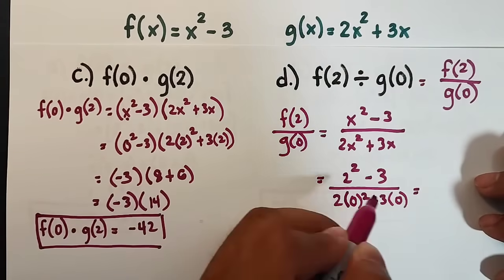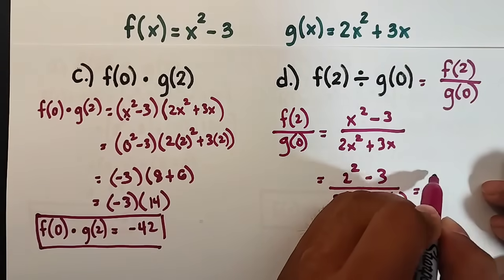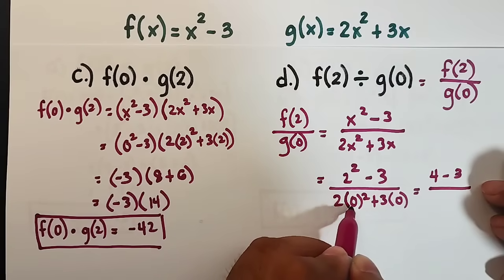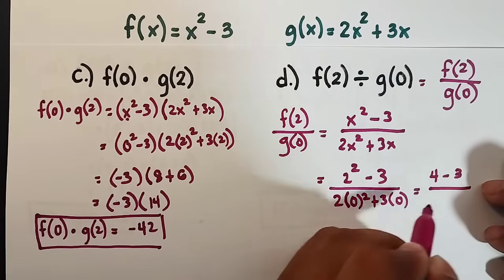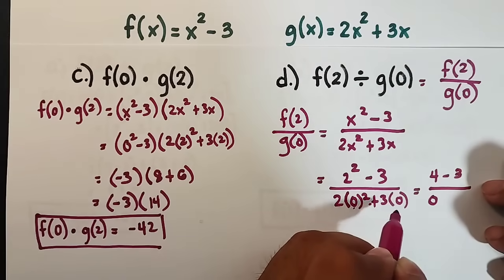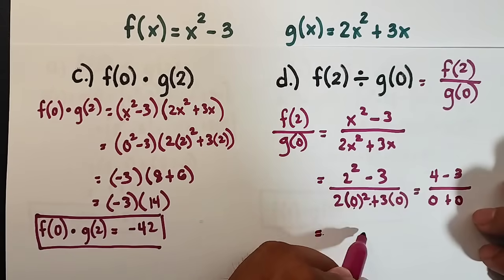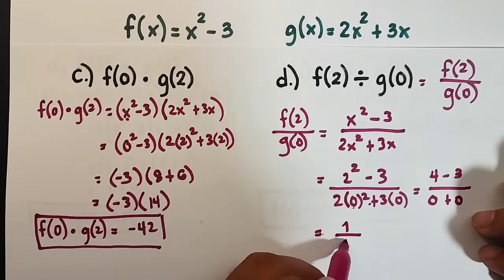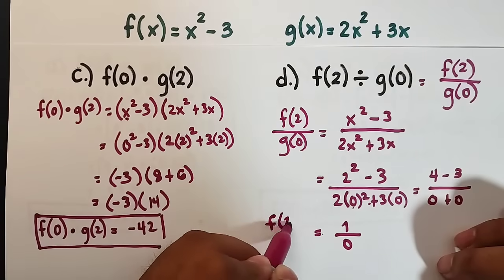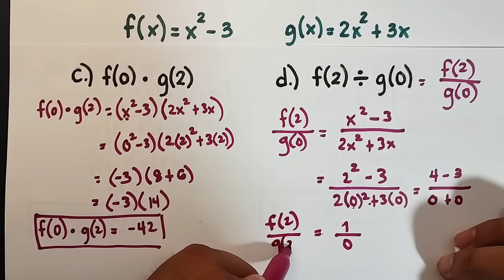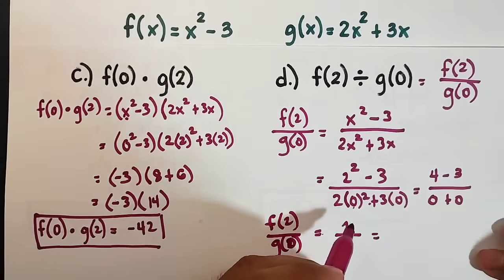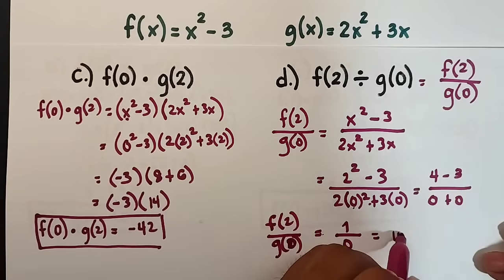Now simplifying this, 2² is 4 minus 3. We have 0² is 0 times 2 is 0, plus 3 times 0 is 0. So as you can see, what we have now is 1 over 0. 1 because 4 - 3, 0 + 0 is 0. So if you have this kind of value, to simplify 1 over 0, this is considered as undefined.